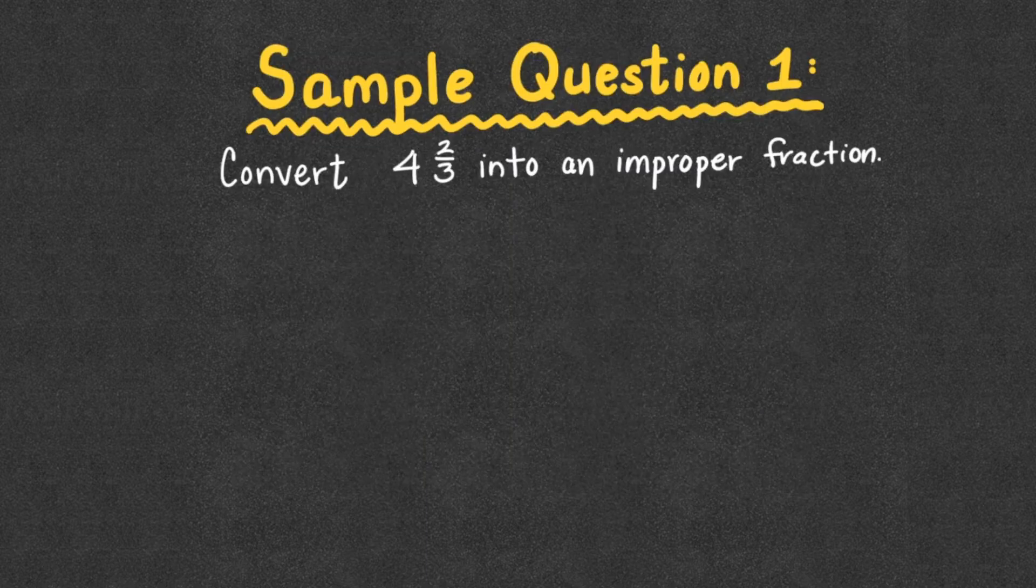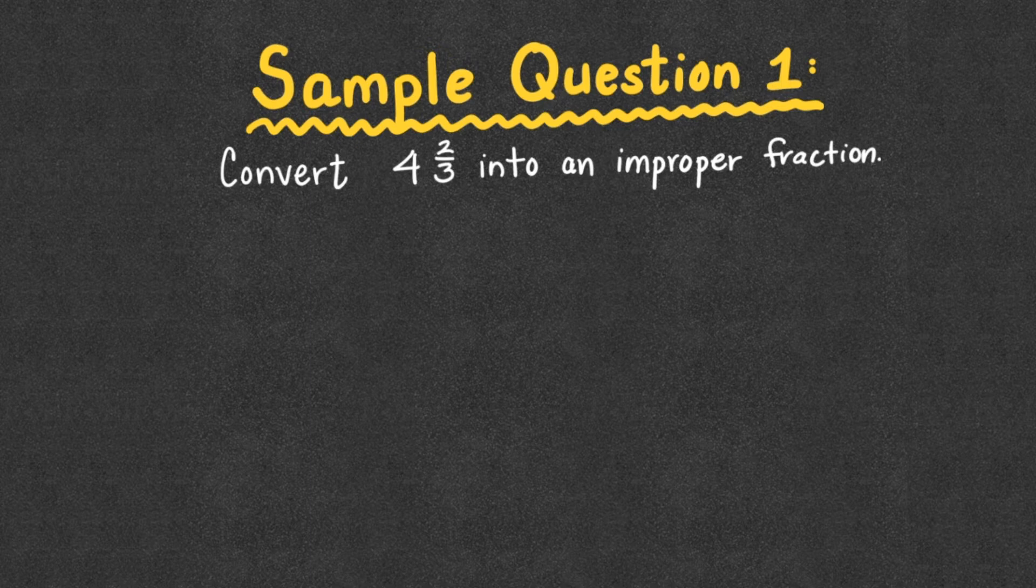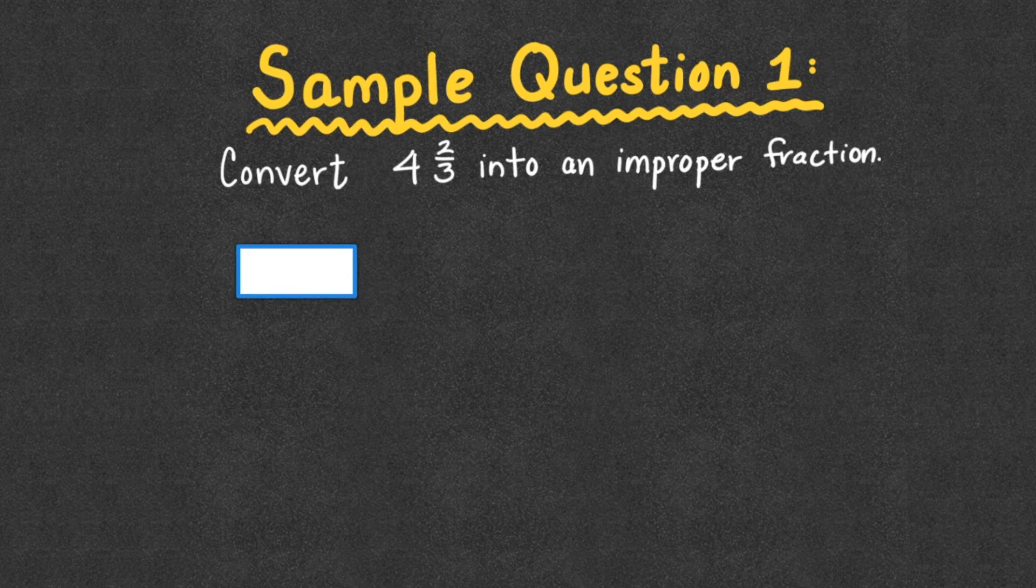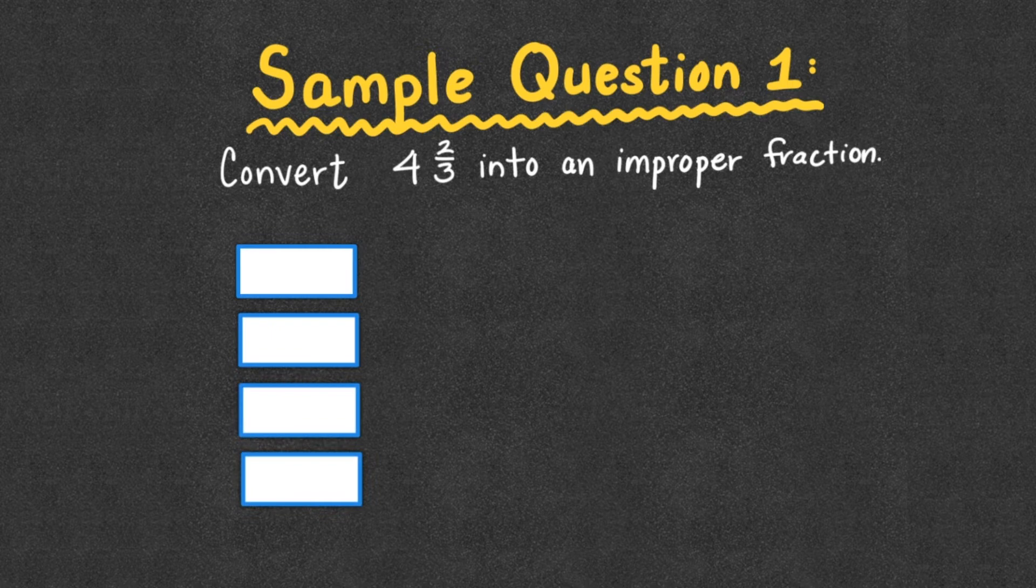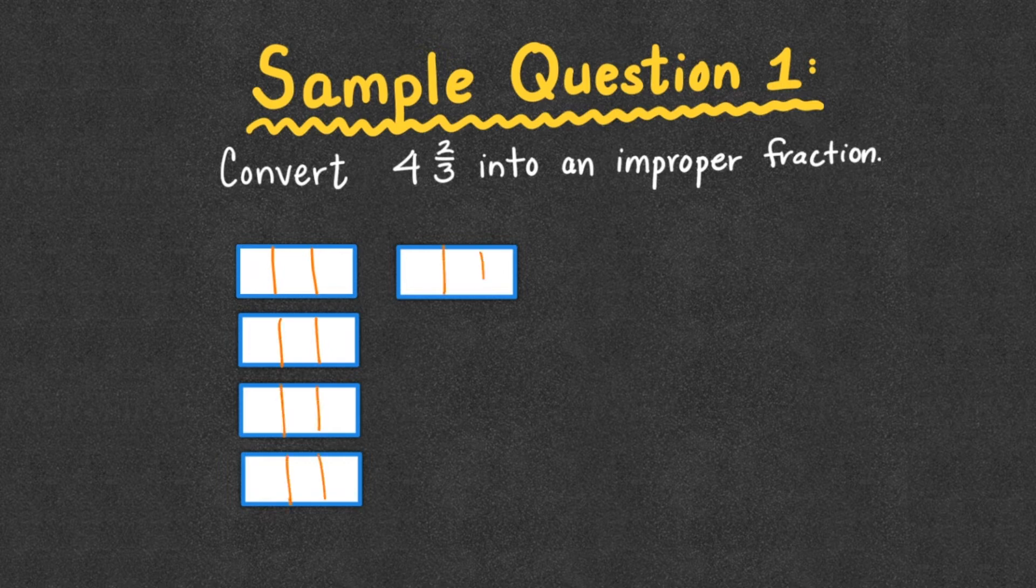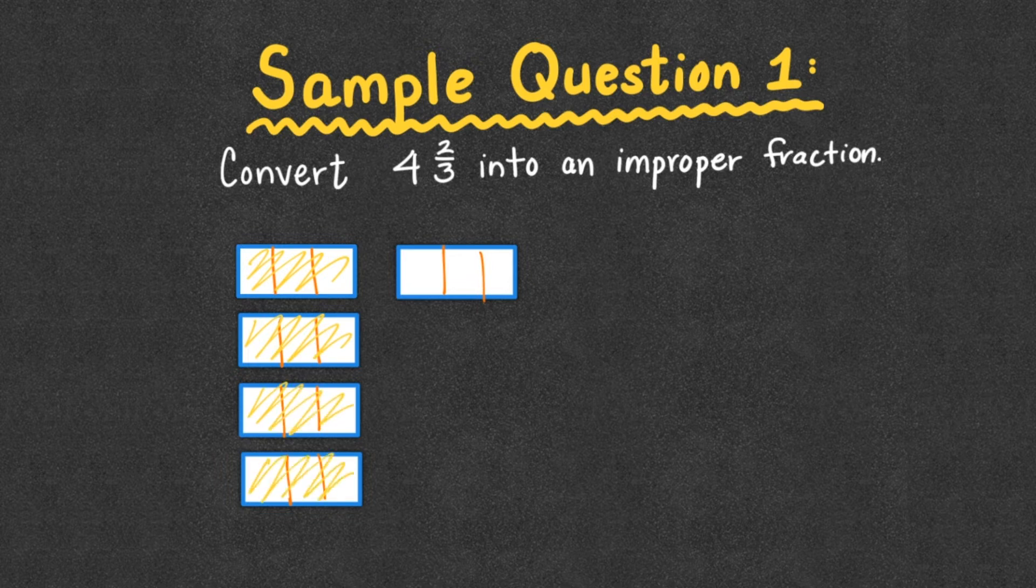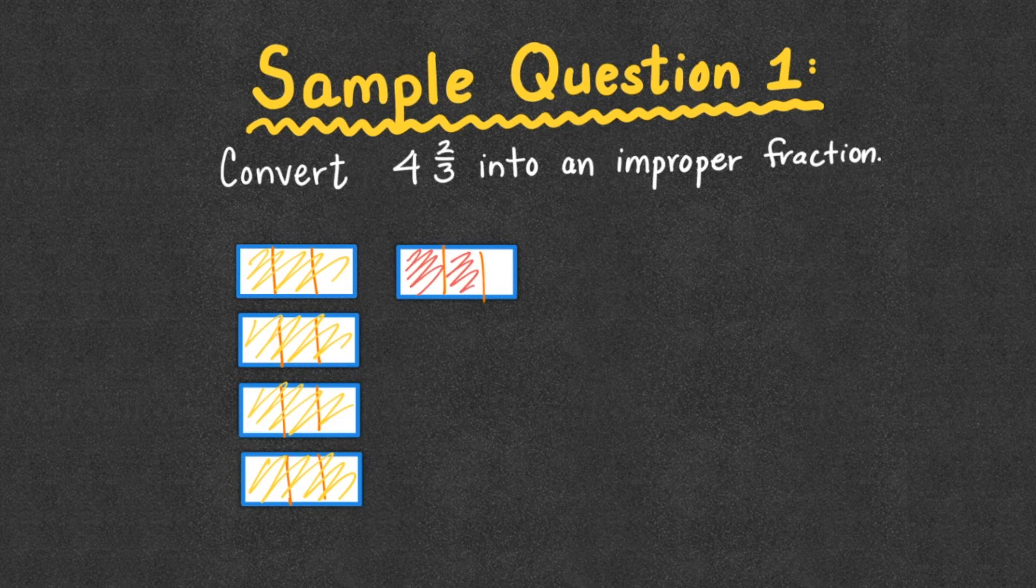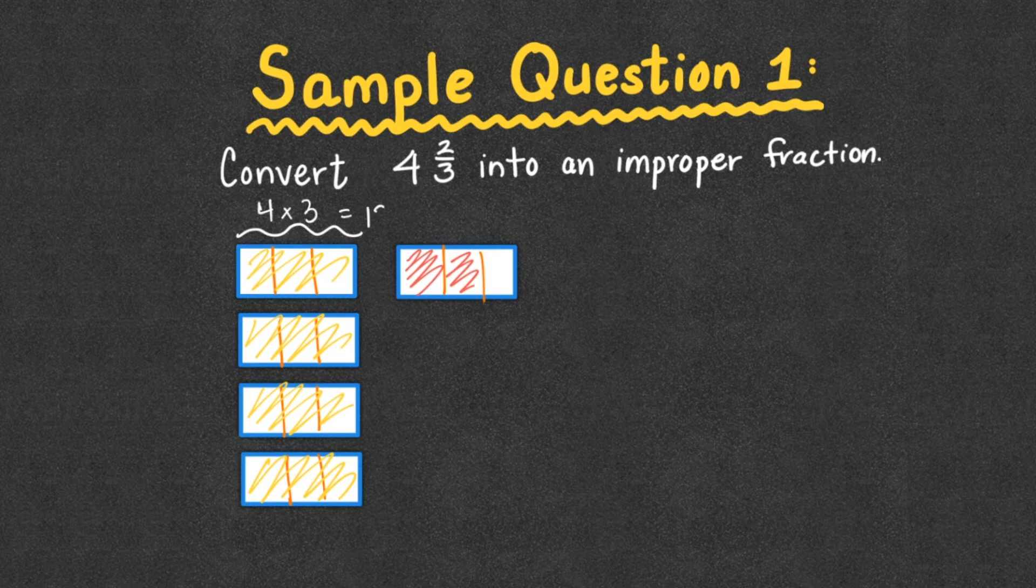So sample question number 1, we're going to convert 4 and 2 thirds into an improper fraction. So what I'm thinking, if we take 4 and 2 thirds, and I'm going to show you one more model. So we have 4 wholes. And I know that we will have an extra for the 2 thirds. But the thirds tell us that each of these is split into threes. And I know that I have 4 wholes of these that are filled in. And 2 thirds. What I want us to see is if I look at the total for these, to find the total, I have 4 wholes with 3 pieces each. Which gives me 12 pieces are filled in.